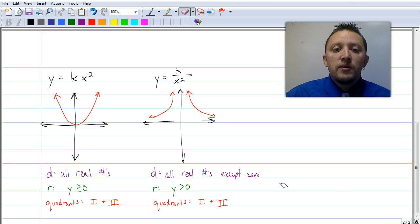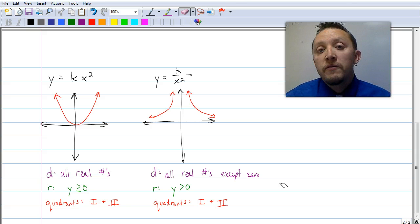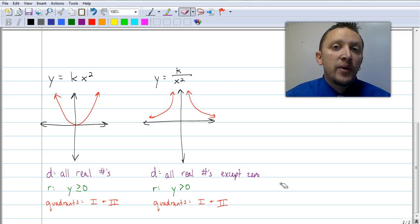Now let's look at these graphs some more. So we're saying that the domain is all real numbers for y equals k times x and k times x squared. But the domain for k divided by x and k divided by x squared is all real numbers except zero. Can you think of why that would be? Why would zero be such a unique number in these two situations with k divided by x and k divided by x squared?